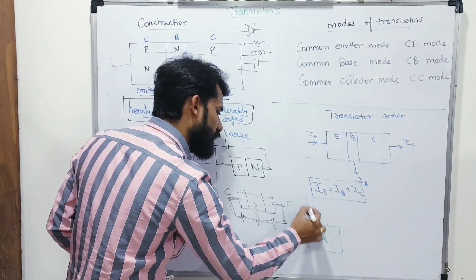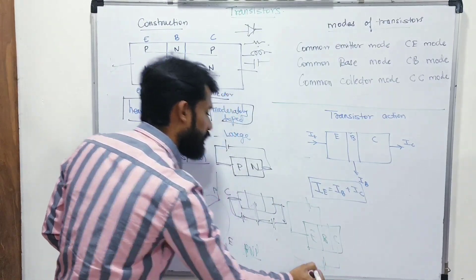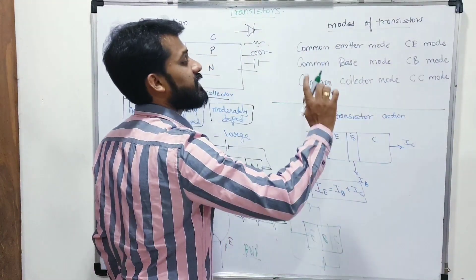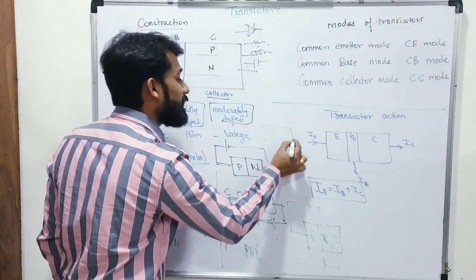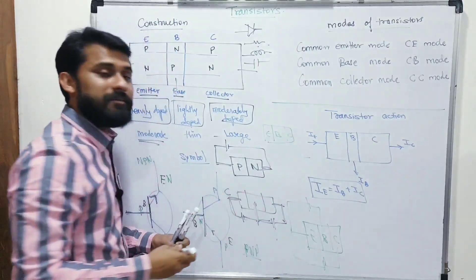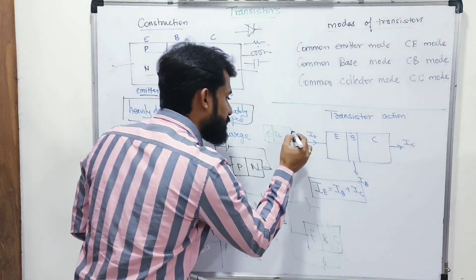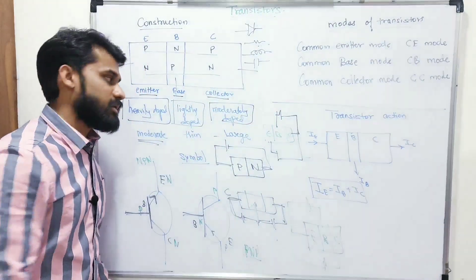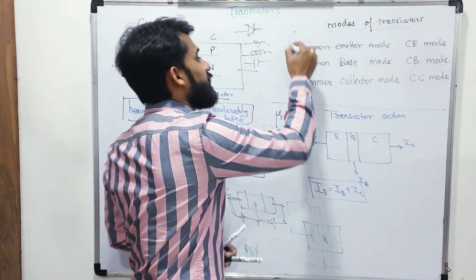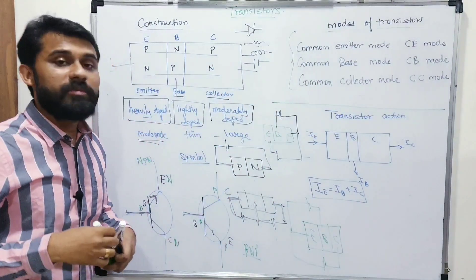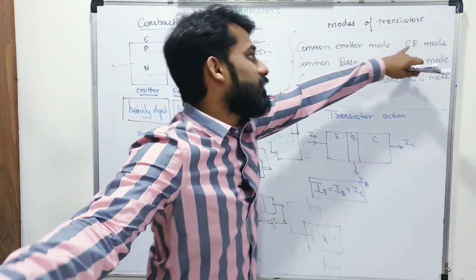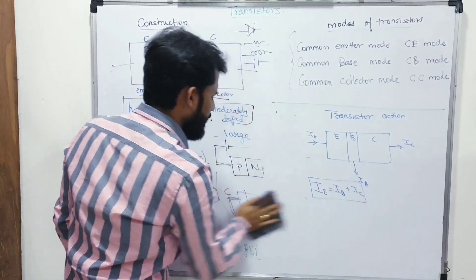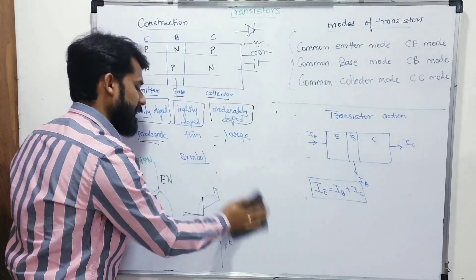Alternatively, I can take emitter as common — giving common emitter configuration, connecting base and collector to the circuit. Or I can use common collector configuration. So there are three types of configurations: common emitter, common base, and common collector. Mostly common emitter configuration is used in practice. We don't need to go into detailed differences between them.